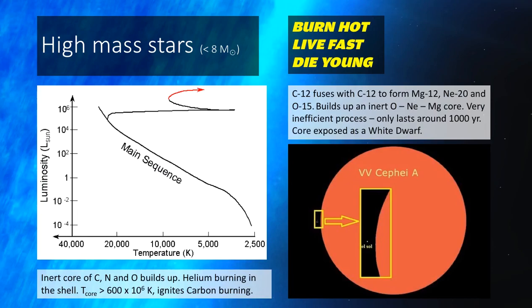As the helium converts into carbon, nitrogen and oxygen, then a core of C-N and O builds up, and again it goes from being a blue supergiant to being an even more luminous and even larger red supergiant star, and these stars really are the biggest stars that we have direct observations of in our galaxy.